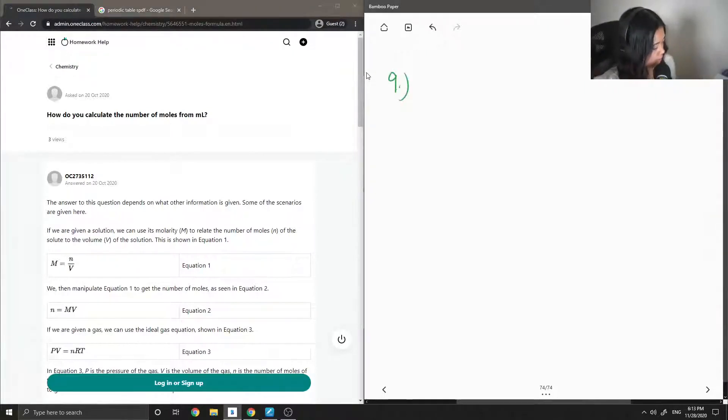The easiest way to do that is by using the concentration formula where concentration is equal to number of moles over volume. So if we know the concentration and we know the volume, we would just need to multiply those two values together to get the number of moles.